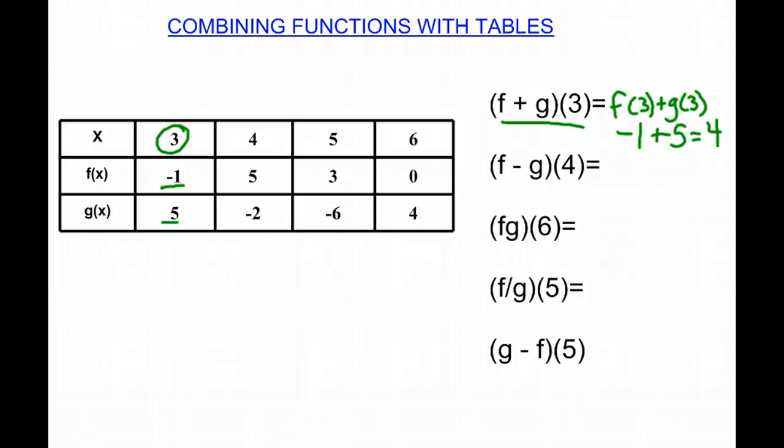Our next equation is (f - g)(4). So we're looking when x is 4, what is f(x) and g(x) at 4? So f(4) minus g(4). f(4) is 5.